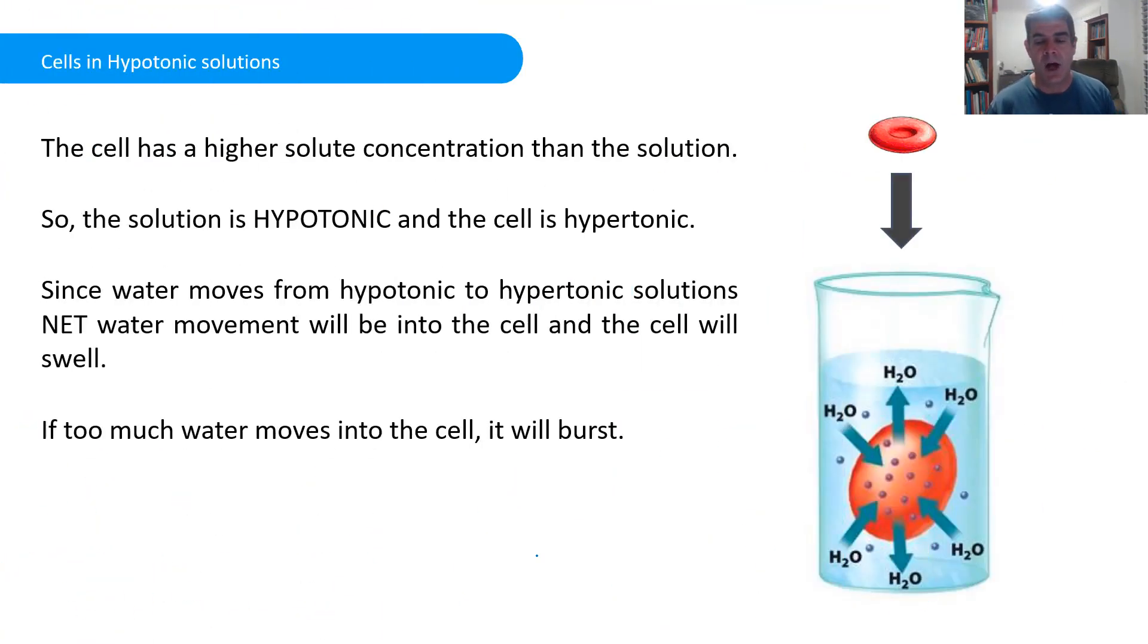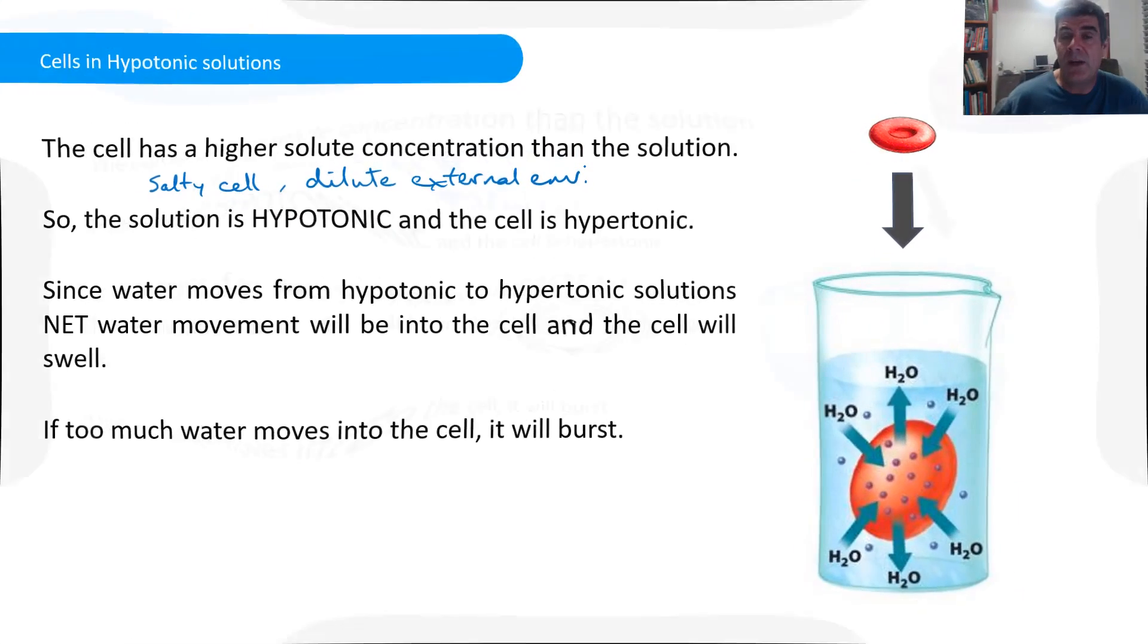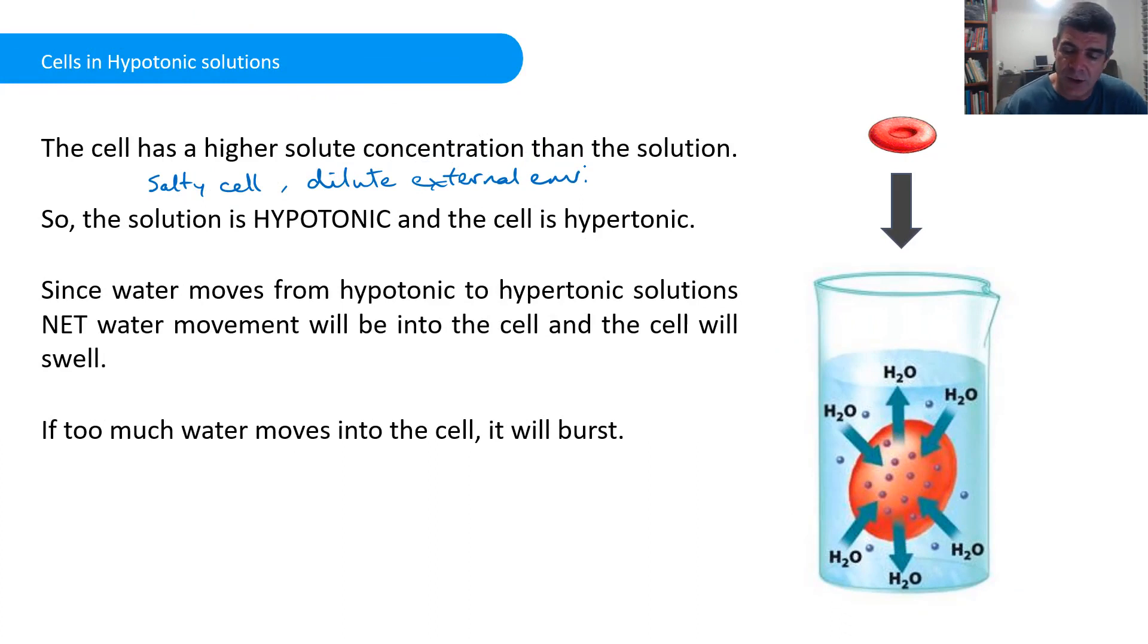The first one we'll look at is a hypertonic solution. In a hypertonic solution, what we're looking at is that the cell has a higher solute concentration than the solution. So we're talking here about a salty cell. We are describing a hypertonic solution because the salt concentration outside of the cell is lower than what it is inside the cell. So that means the salt would want to move outside of the cell, but it also means that the water is going to move in.